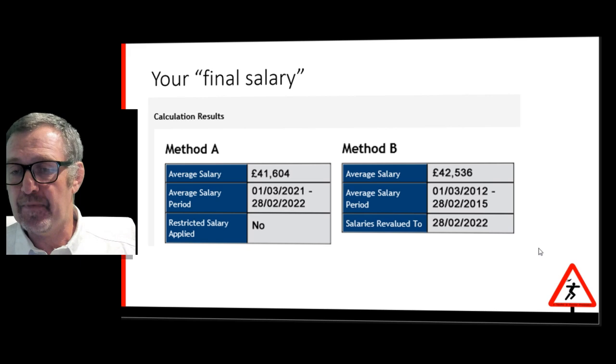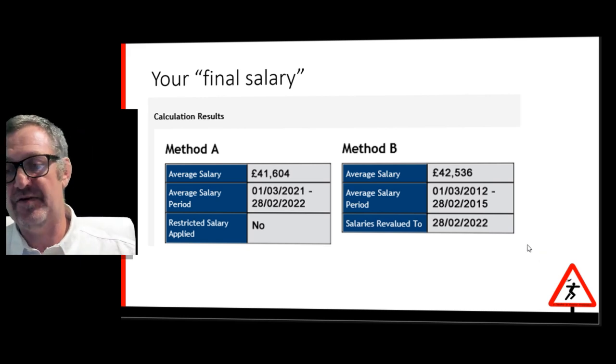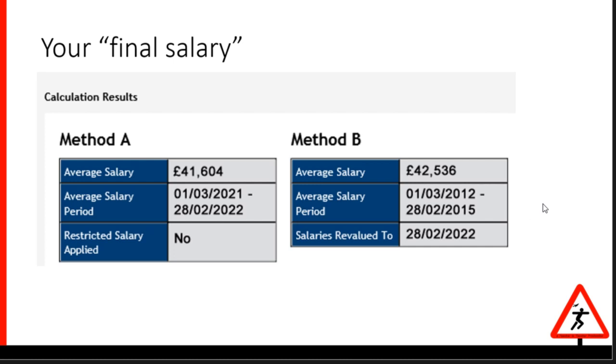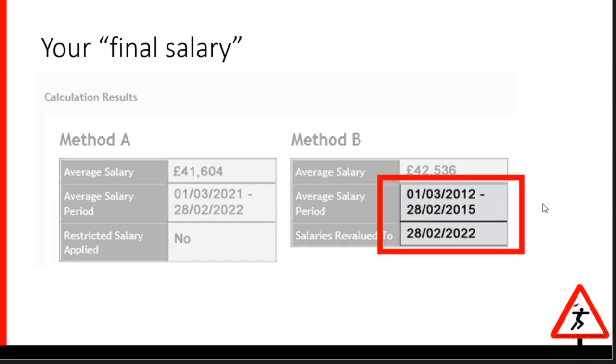But for now, I want to focus on the dates of Method B. This statement was prepared at the end of February 2022, and the three years being used start at that maximum of 10 years before that, that is in March 2012. This is the first warning sign that your final salary could be about to drop and take your pension with it.